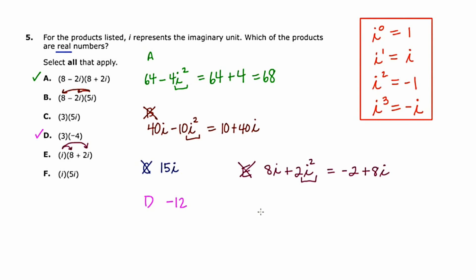And then we'll finish with f. And this is going to be just multiplying, getting us 5i squared. And i squared, of course, is negative 1. So we have 5 times negative 1, or negative 5, which is real.